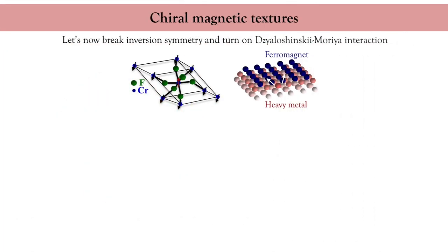We have seen in a previous lecture that when a magnetic crystal lacks inversion symmetry, an anti-symmetric exchange interaction emerges, known as the Dzyaloshinskii-Moriya interaction. In contrast with Heisenberg exchange, which favors collinear spin arrangements, the Dzyaloshinskii-Moriya interaction favors canted magnetic arrangements. It can be found in bulk crystals lacking an inversion center, or at interfaces.